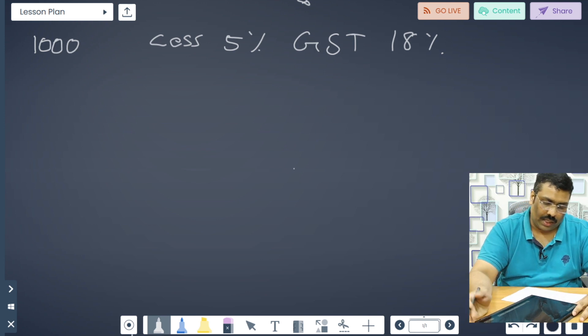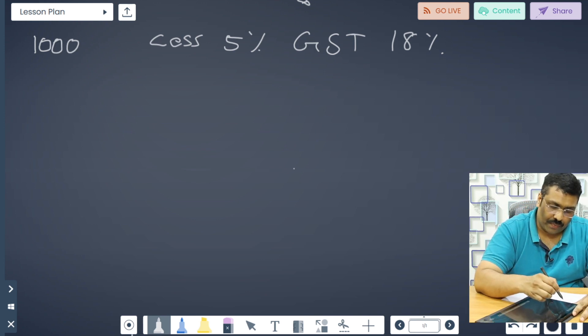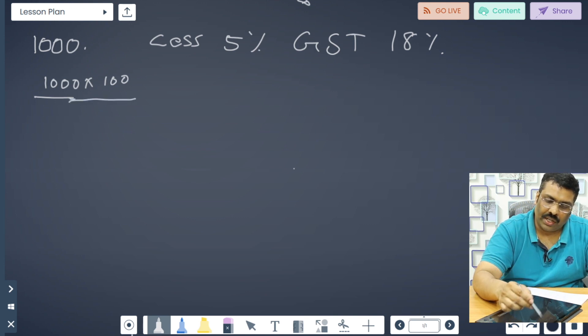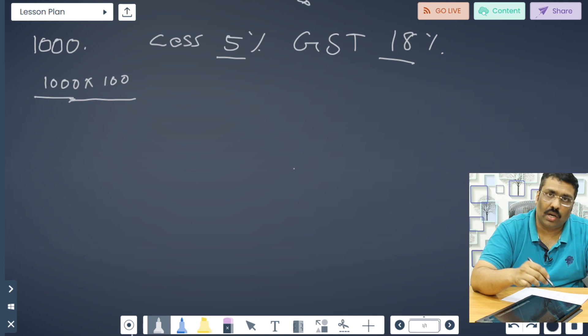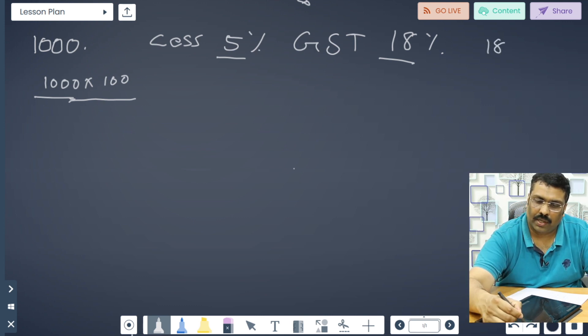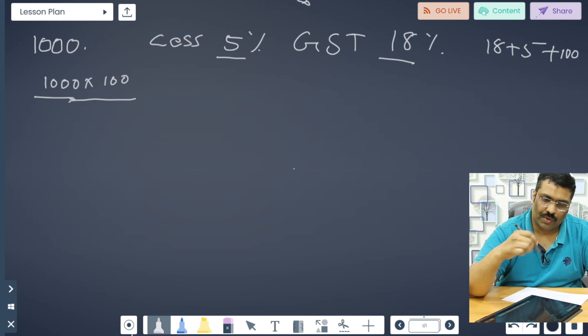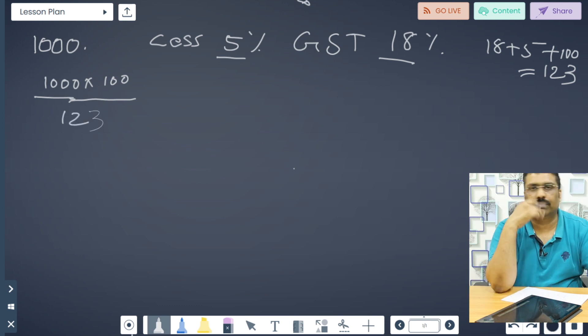Thousand into 100, divided by - this is 18 plus 5, you need to make the sum, it will be 23. You will add one more 100. 18 plus 5, these two percentages plus 100, so it will be 123. Put it here, 123.